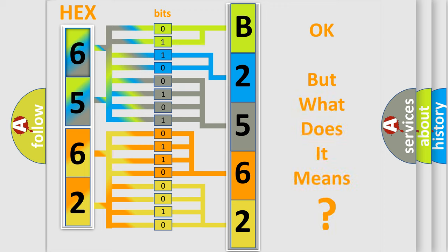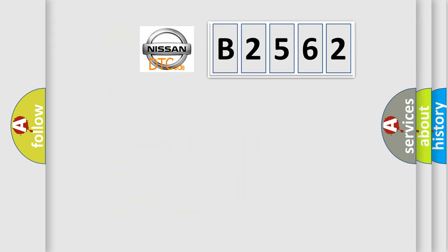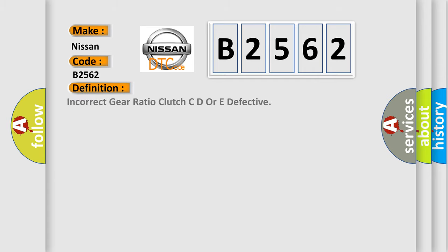The number itself does not make sense to us if we cannot assign information about what it actually expresses. So, what does the diagnostic trouble code B2562 interpret specifically for Nissan car manufacturers? The basic definition is: incorrect gear ratio — clutch C, D, or E defective.